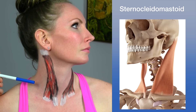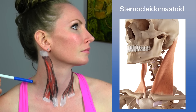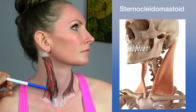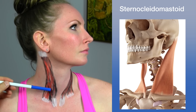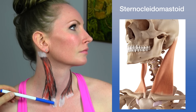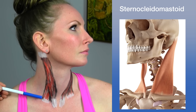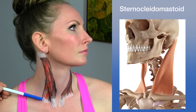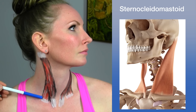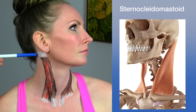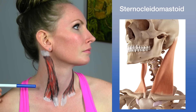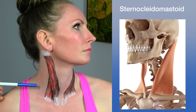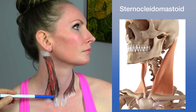The anterior scalene flexes, laterally flexes, and contralaterally rotates the neck at the spinal joints, and elevates the first rib at the sternocostal and costovertebral joints. The scalenus medius flexes and laterally flexes the neck and also elevates the first rib. The posterior scalene laterally flexes the neck and elevates the second rib at the sternocostal and costovertebral joints.